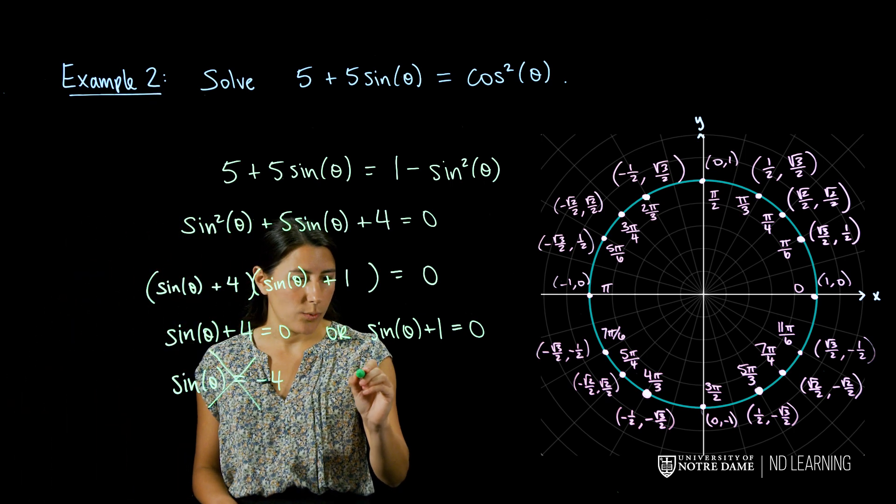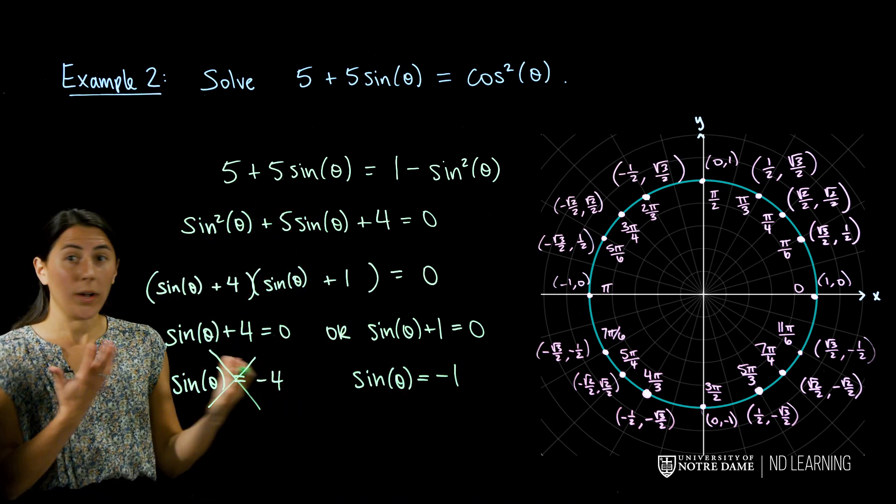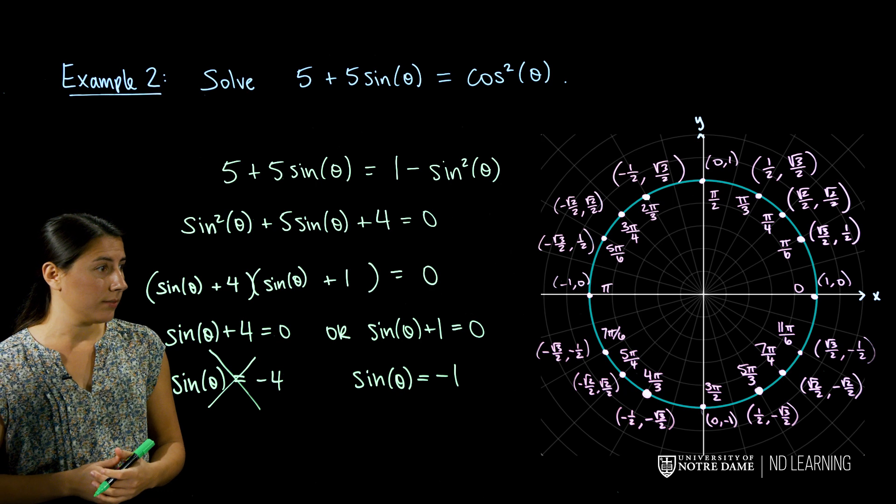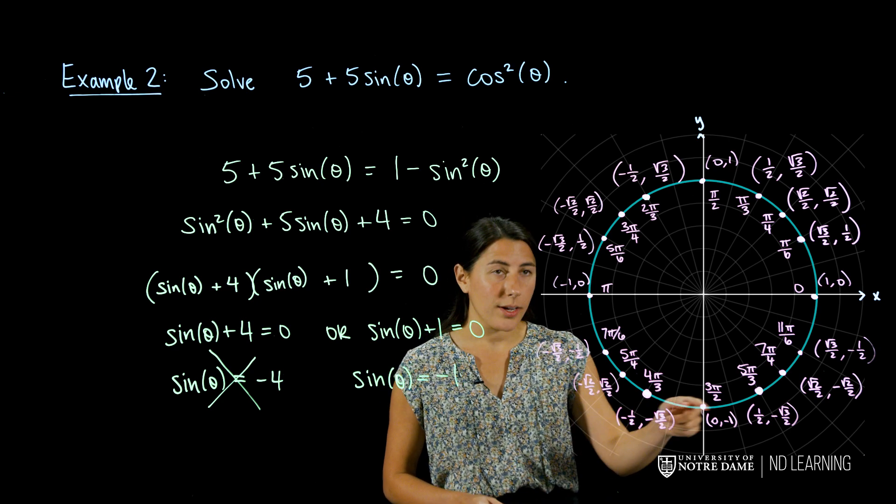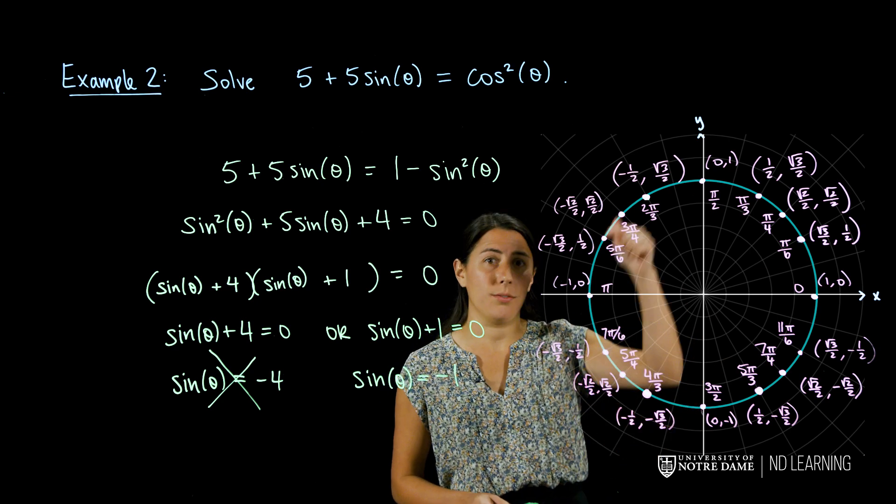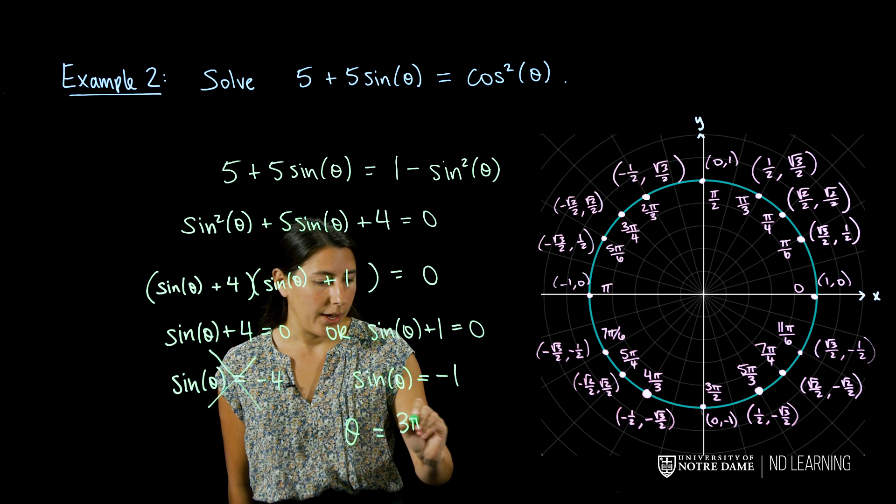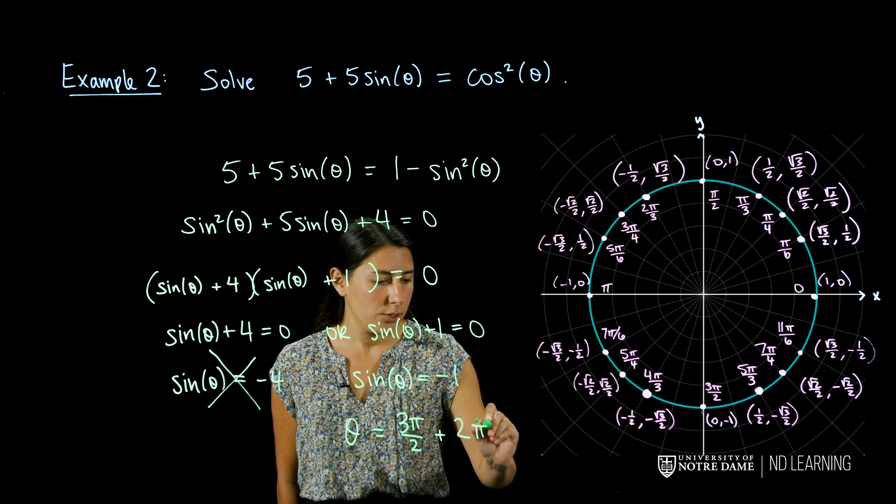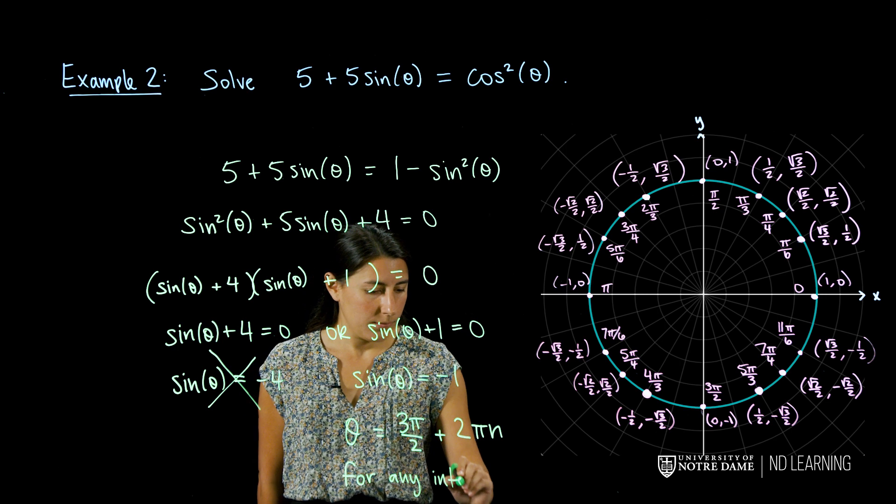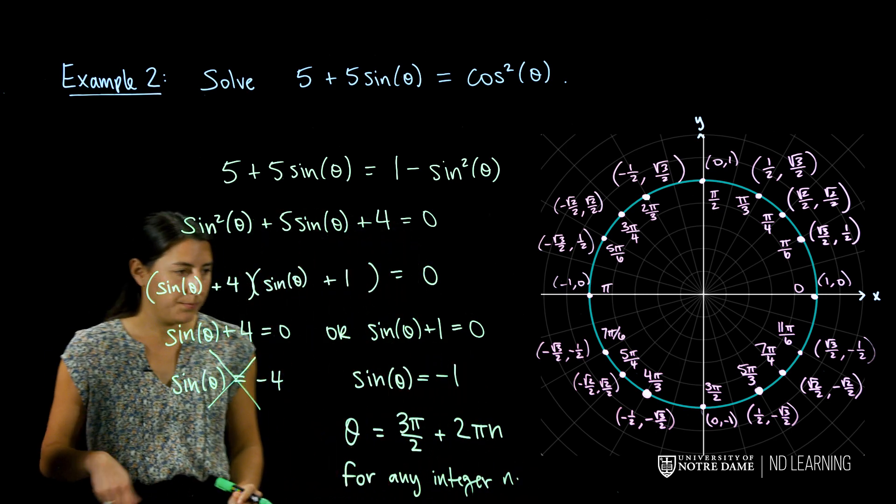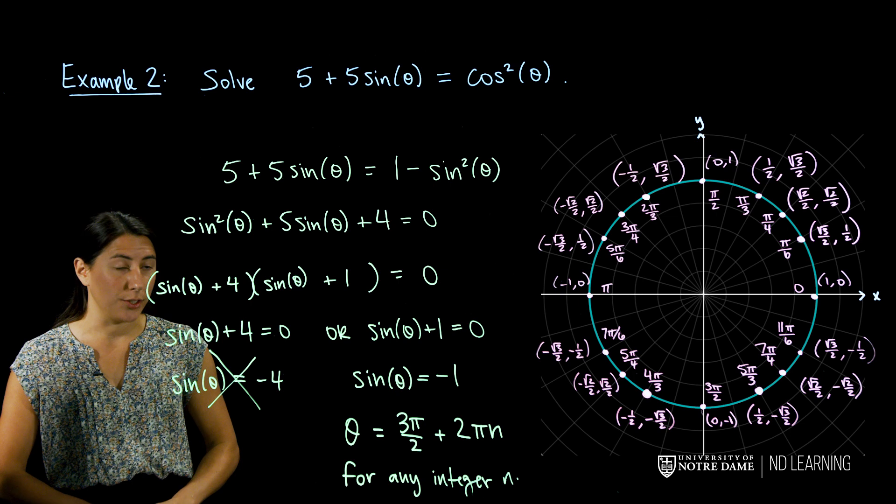Whereas if we looked at sine of theta plus 1 and solved for sine theta, I want to know what angles does sine have value negative 1? Looking at the angles between 0 and 2 pi, that happens at 3 pi over 2. But it also happens at any 2 pi multiple of 3 pi over 2. So sine of theta is equal to negative 1 for any angle 3 pi over 2 plus 2 pi times n where n is an integer. So again, the angles that satisfy this quadratic trigonometric equation are theta equal to 3 pi over 2 plus 2 pi n.